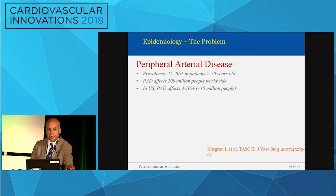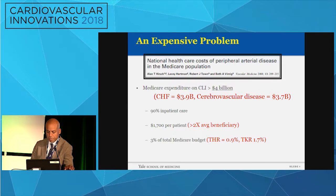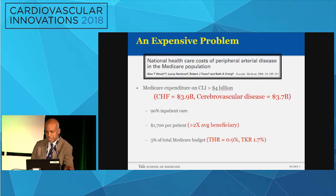This is relevant because all patients with peripheral vascular disease - the number is significant. The prevalence is quite high. In the U.S. alone it's about 200 million people. In terms of critical limb ischemia, about 10% of patients with PAD will go on to suffer from CLI, and those with only claudication about 5-10% will go into this type. It's very expensive. When you look at Medicare data, it's about $4 billion yearly - contrast that with heart failure and stroke, and the numbers are staggering.